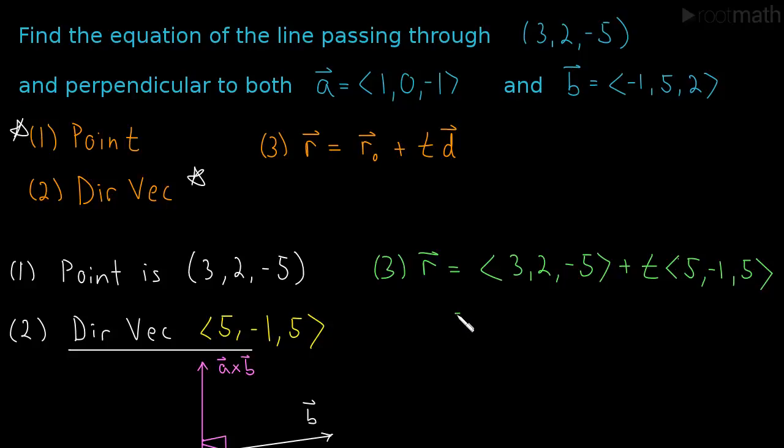So this ends up being (3 + 5t, 2 - t, -5 + 5t). All I did was multiply the t through and then add these two vectors together. And so from here we can easily read off the parametric equations. We get x is 3 + 5t, just reading off the x component. y is 2 - t, reading off the y component, and z is -5 + 5t, just reading off the z component. And there you have it, the parametric equations. See you in the next video.